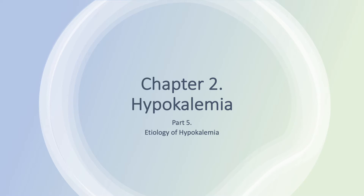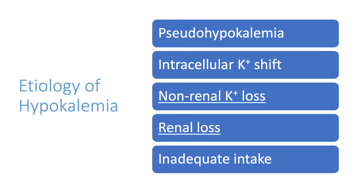We are still on Chapter 2, Hypokalemia, and this is Part 5: Etiology of Hypokalemia. This is very important. When we make a diagnosis of hypokalemia, we want to know why the patient is hypokalemic. There are five causes: number one, pseudohypokalemia; number two, intracellular shift of potassium; number three, non-renal potassium loss; number four, renal potassium loss — the most common causes; and number five, inadequate intake.